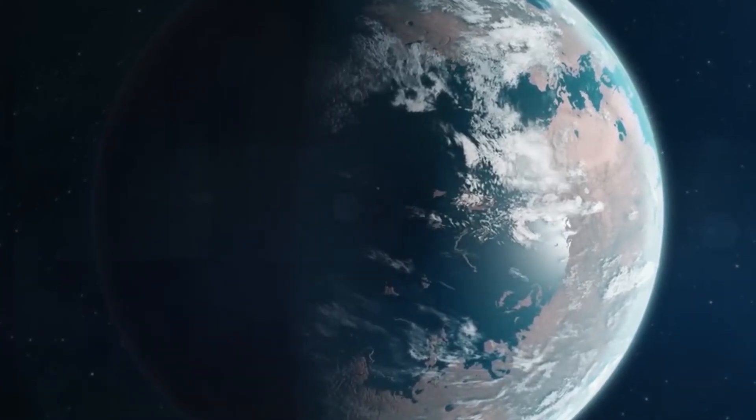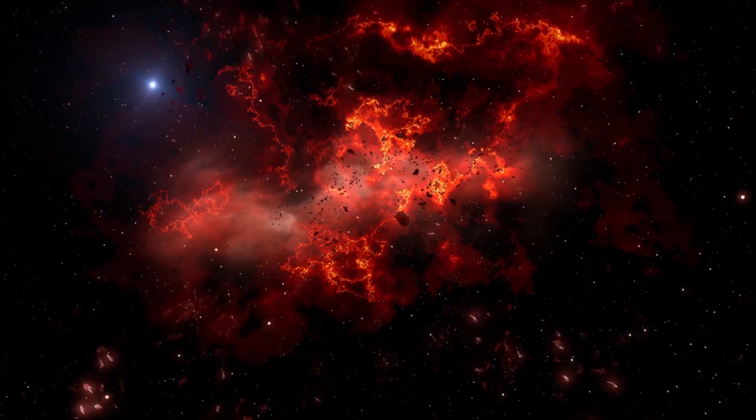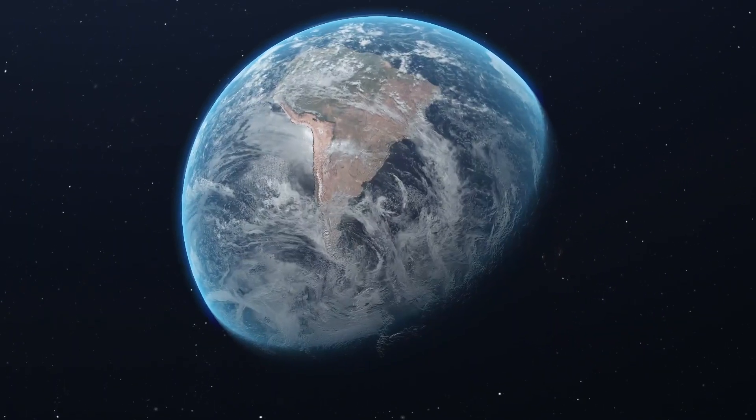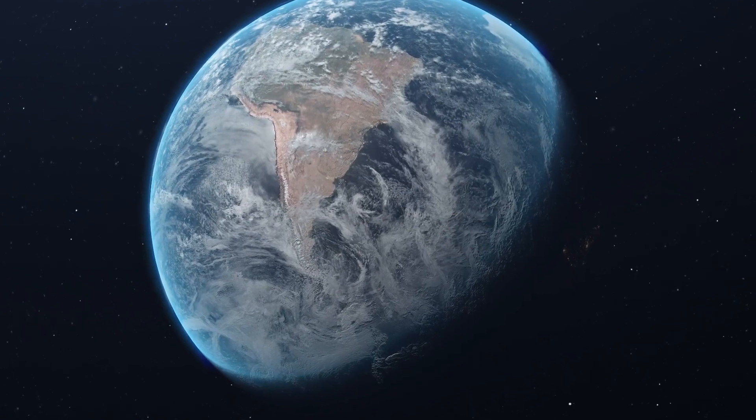An exoplanet orbiting a binary star system is known as Methuselah due to its extreme age. It's around 12.7 billion years old, nearly three times the age of the Earth.